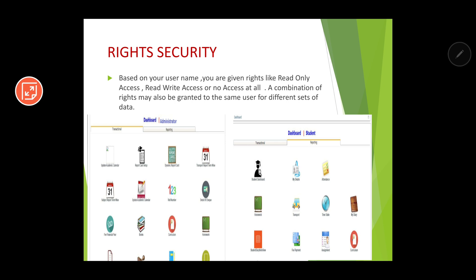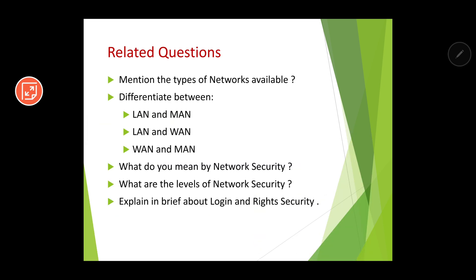To summarize, there are two levels of security: login security, which provides a username and password, and right security, which gives different rights to different users even on the same website. This brings us to the end of this chapter. I've given some questions for you to attempt. Thank you very much — I'll see you in the next chapter. I hope this session was useful.